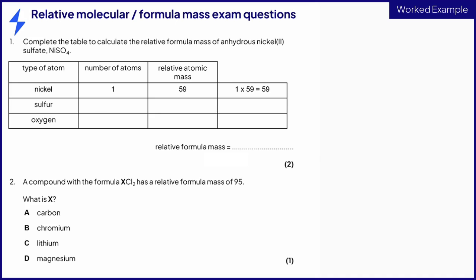NiSO4 contains one nickel atom, one sulfur atom and four oxygen atoms. Remember the small number belongs to the element before. This means that the answer as shown contains one nickel atom. It also contains one sulfur atom and four oxygen atoms. From the periodic table nickel has a relative atomic mass of 59 as shown in the answer. Sulfur has a relative atomic mass of 32 and oxygen has a relative atomic mass of 16. These values can now be filled into the table. In the question nickel is given as an example, 1 times 59. So sulfur contributes a total mass of 1 times 32 or 32.